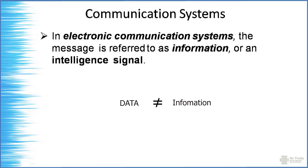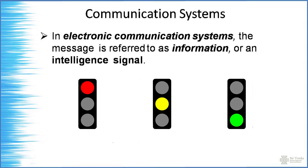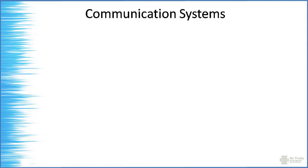Don't confuse data and information. Data is just a number or symbol, but information is how you interpret that number or symbol. For example, in a traffic light system, the colors red, orange, and green are data. How we interpret them — red means stop, orange means standby, green means go — that is information.